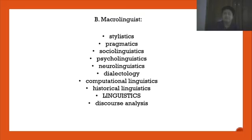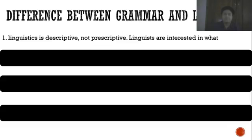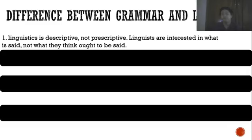Now there are questions commonly asked about the difference between linguistics and grammar. The first difference is that linguistics is descriptive, not prescriptive. Linguists are interested in what is actually said, not what they think ought to be said.